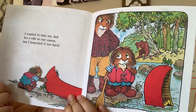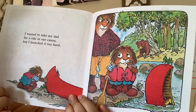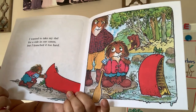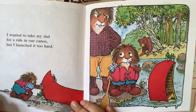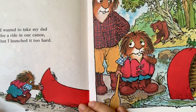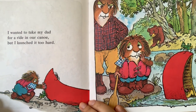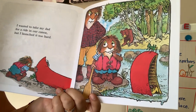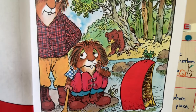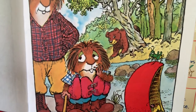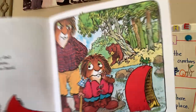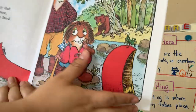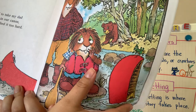I wanted to take my dad for a ride in our canoe, but I launched it too hard. But he keeps trying — that's a good character trait. Do you see what's peeking behind? Oh no, it's the bear! I hope it doesn't go bother them.